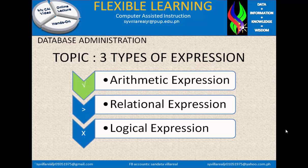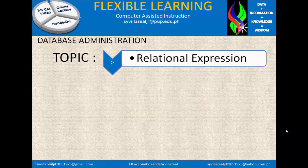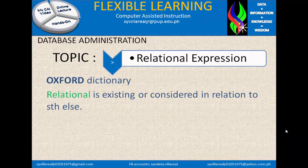Right now we are finished with the arithmetic expression — the three types of expressions. Now we can move to relational expression. What is relational? In the Oxford Dictionary, relational is defined as existing or considered in relation to something else.